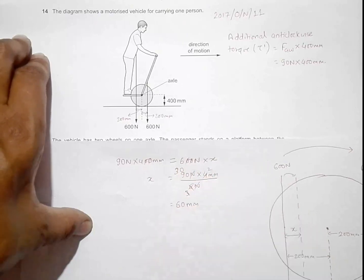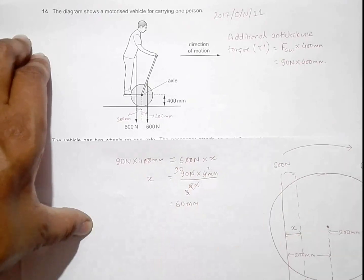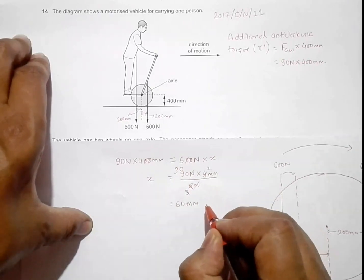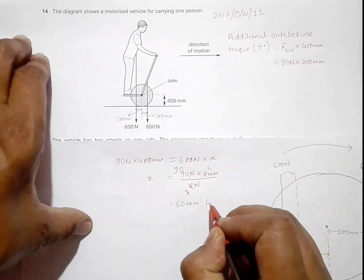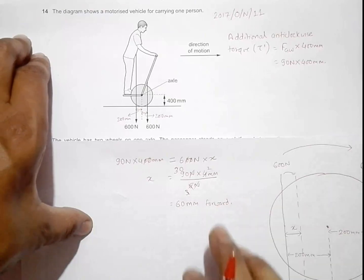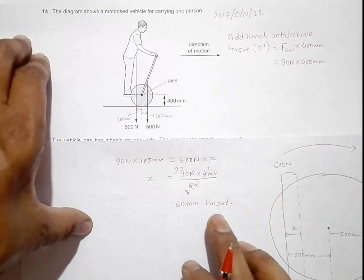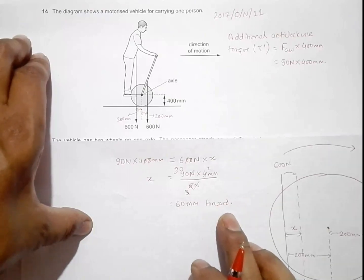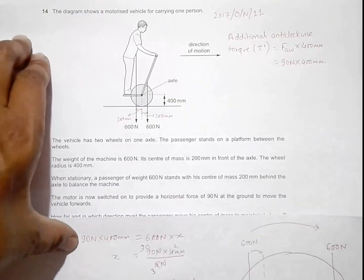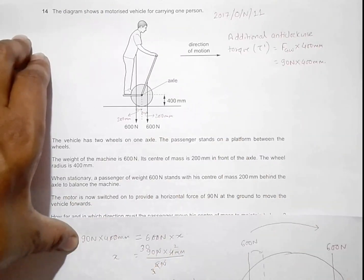x equals 60 millimeter towards the axle, which means 60 millimeter forward. The person has to lean 60 millimeter forward to maintain balance while the motorized vehicle moves forward. Thank you.